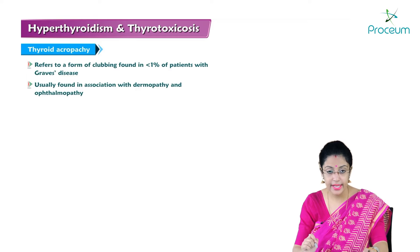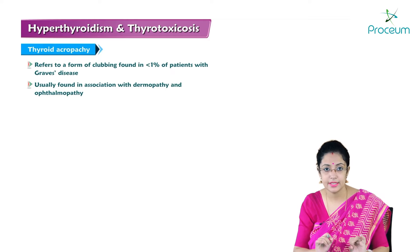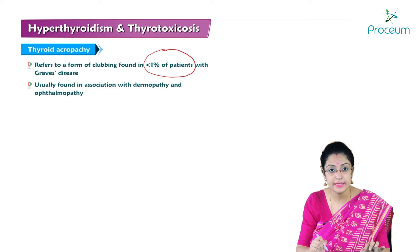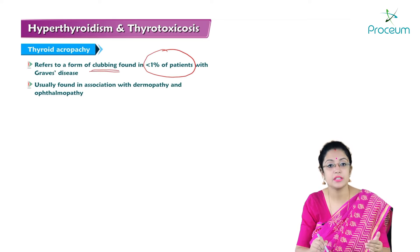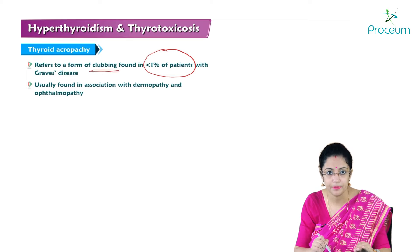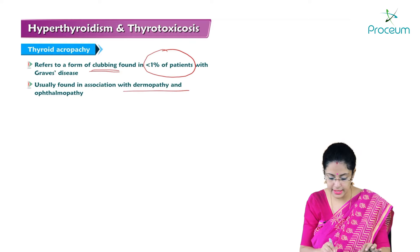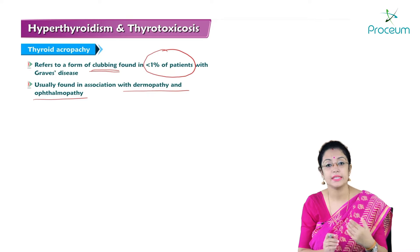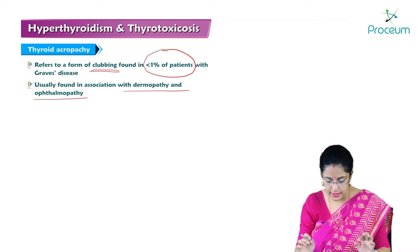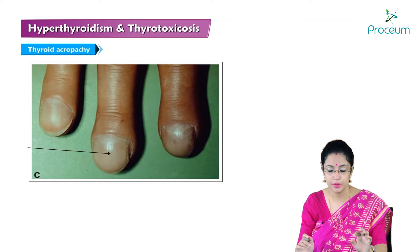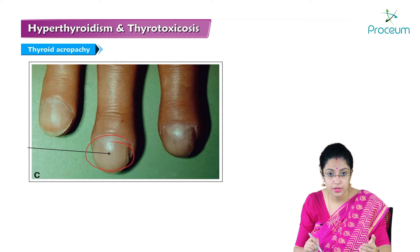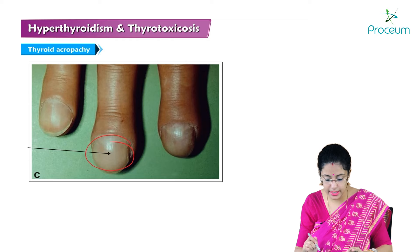Thyroid acropathy refers to nail changes in hyperthyroidism — specifically clubbing seen in less than 1% of Graves disease patients. This clubbing is known as thyroid acropathy and is usually found in association with dermopathy and ophthalmopathy. The image shows prominent clubbing, almost grade 3 to 4, which is known as thyroid acropathy.